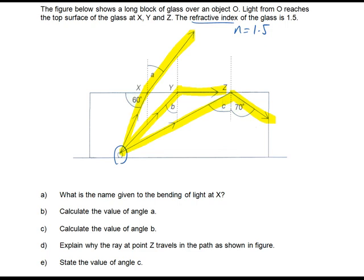Now, let's take a look at the first question. What is the name given to the bending of light at point X? As you can see, this is normal bending of light. Therefore, it will be refraction.